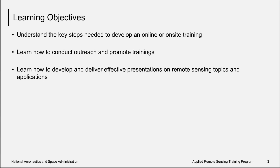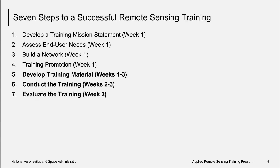The purpose of this course is to understand the key steps needed for developing online and on-site training, learning how to conduct outreach and promote your trainings, and how to develop and deliver effective presentations on remote sensing topics and applications. Last week we covered steps one through four, and today we'll focus on steps five, six, and seven as they relate to on-site or face-to-face training — developing the training material, conducting the training, and evaluating your training.